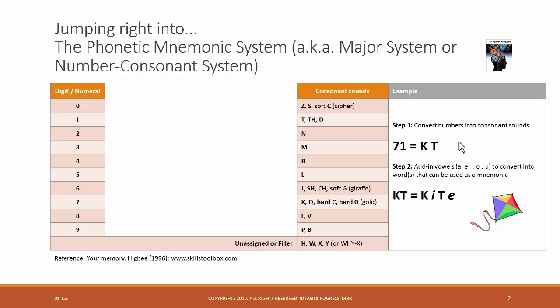So the question: how to remember a number using the Phonetic Mnemonic System? The way it works is in two steps. Step 1 is to convert the number into consonant sound using the Phonetic code. Let's take the number 71 for example.